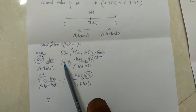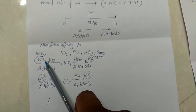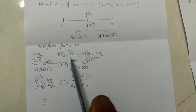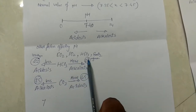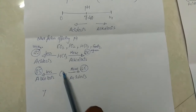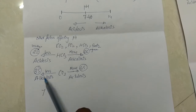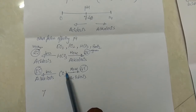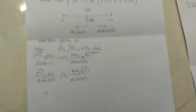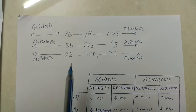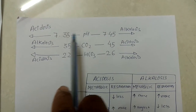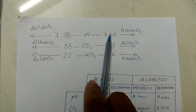Other factors affecting pH include CO2, PO2, and HCO3. If HCO3 is less than 22, it is acidosis; if HCO3 is more than 26, it is alkalosis. If CO2 is less than 35, it is alkalosis; if CO2 is more than 45, it is acidosis.